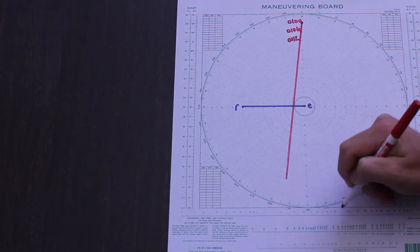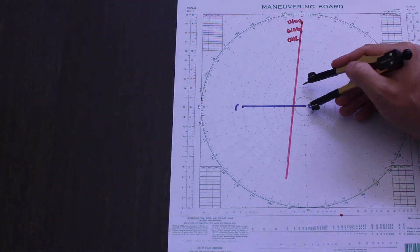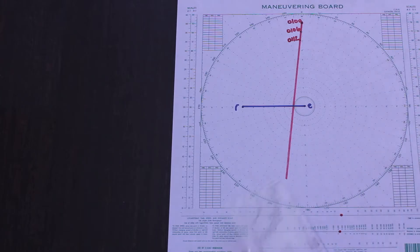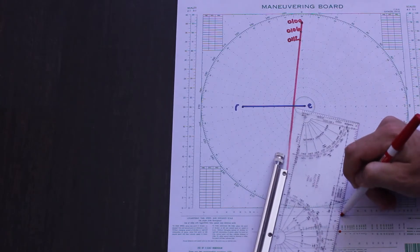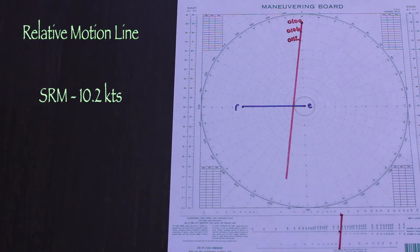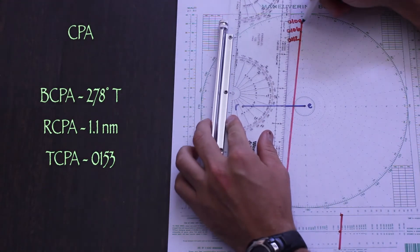Next is the speed of relative motion, which we determine by using the speed distance time nomogram. And the SRM is just over 10 knots. You don't always have to calculate CPA since it's apparent the contact is going to pass at one nautical mile, but you can to be thorough.